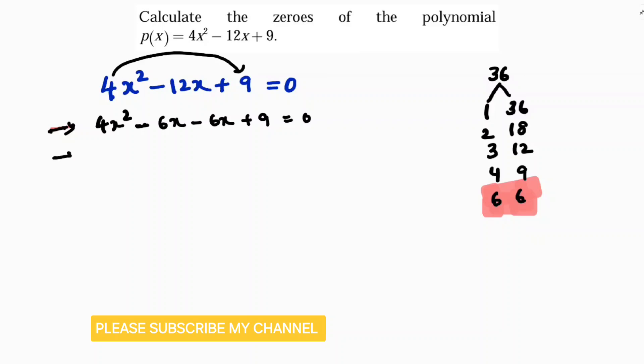So now if I take 2x common in the first two terms, I'll be left with 2x minus 3. If I take 3 common in the next two terms, I'll be left with 2x minus 3 equals 0.